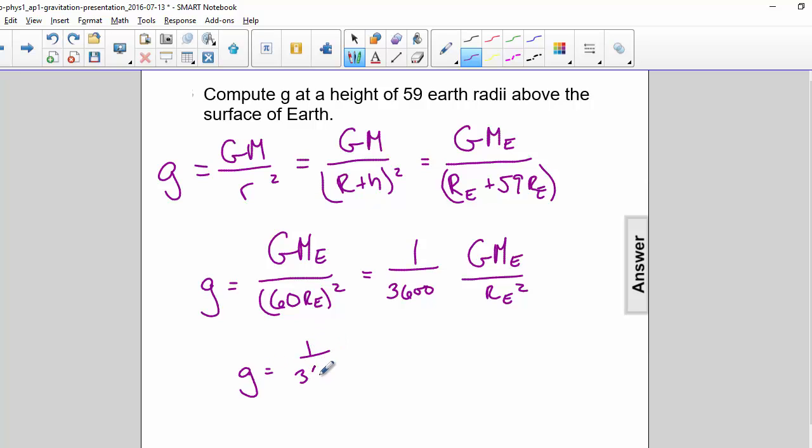So 1 over 3600 times, and we know this to be 9.8. So our answer is 2.7 times 10 to the negative 3 meters per second squared.